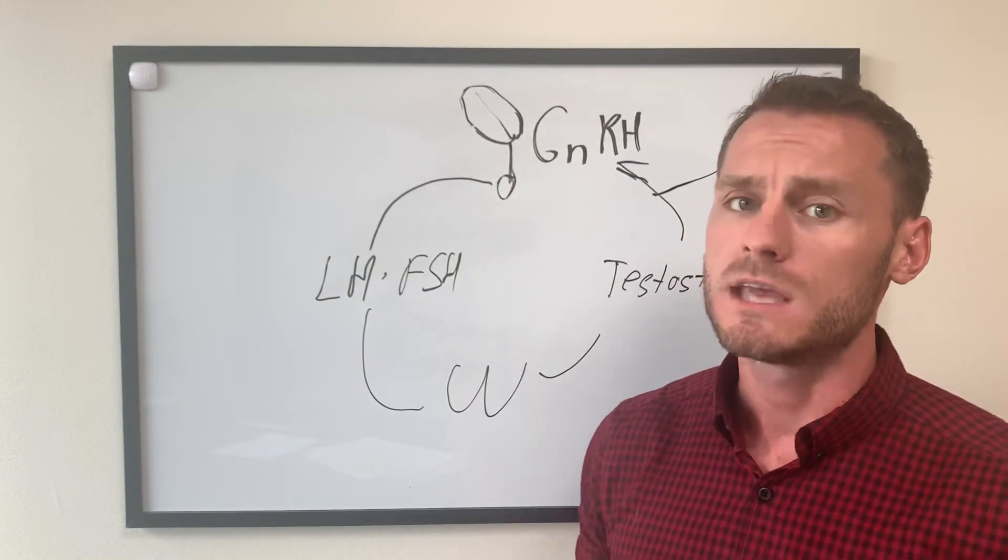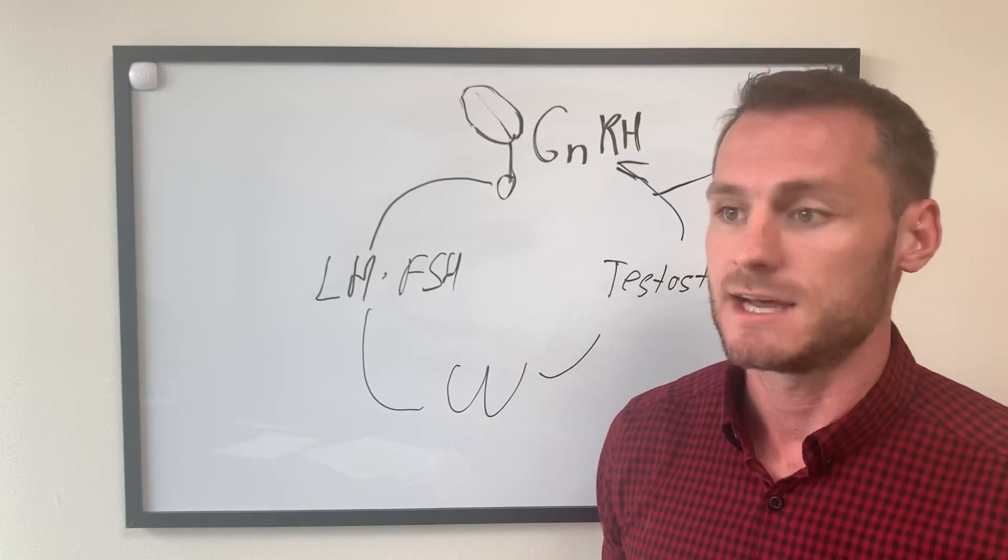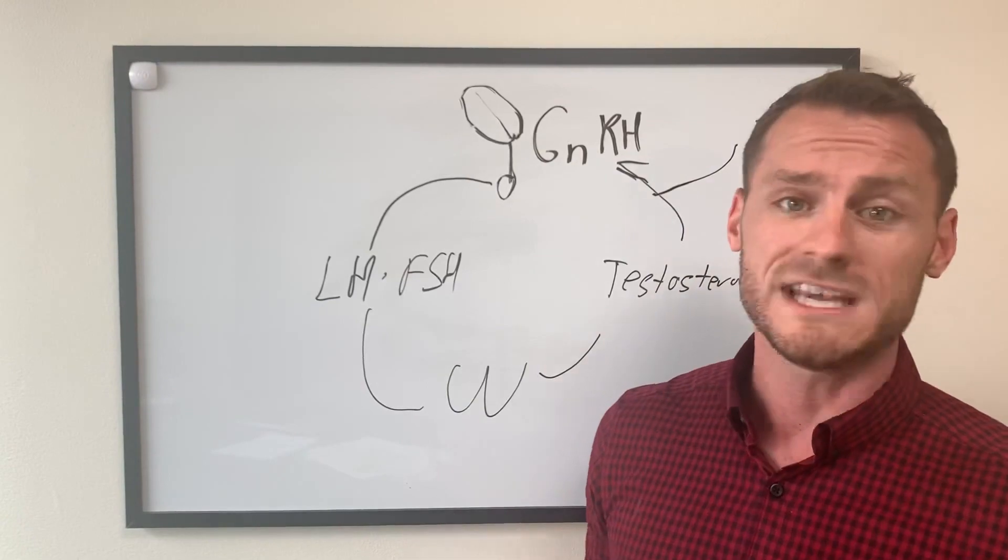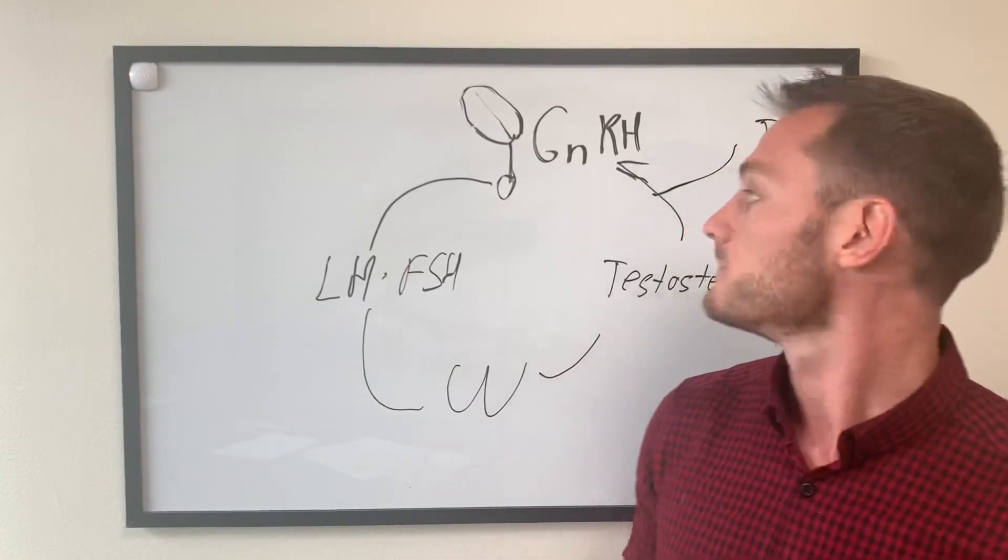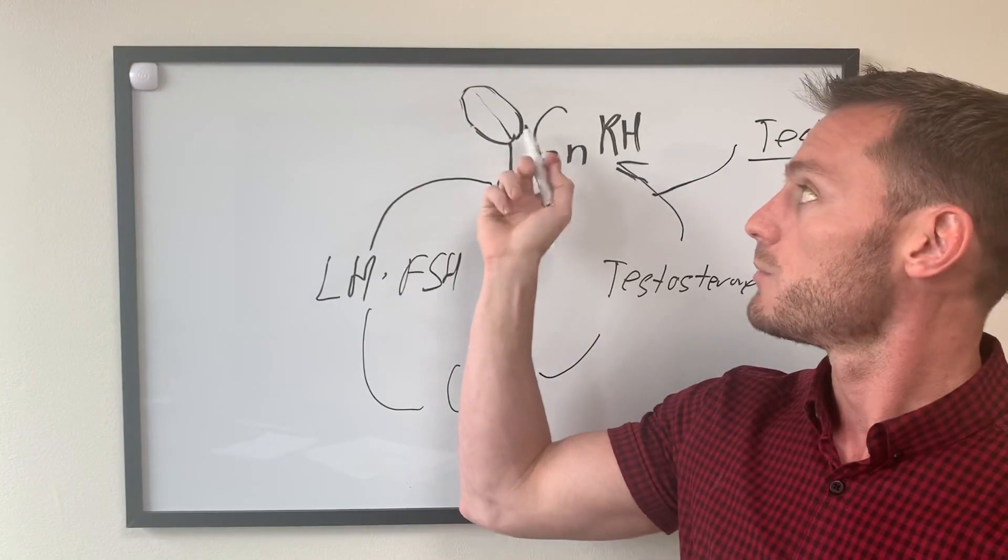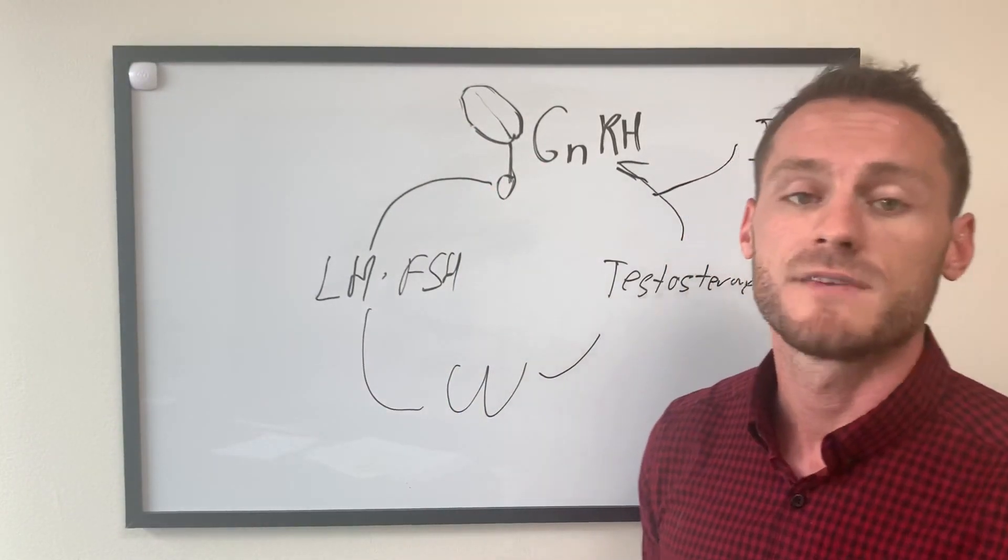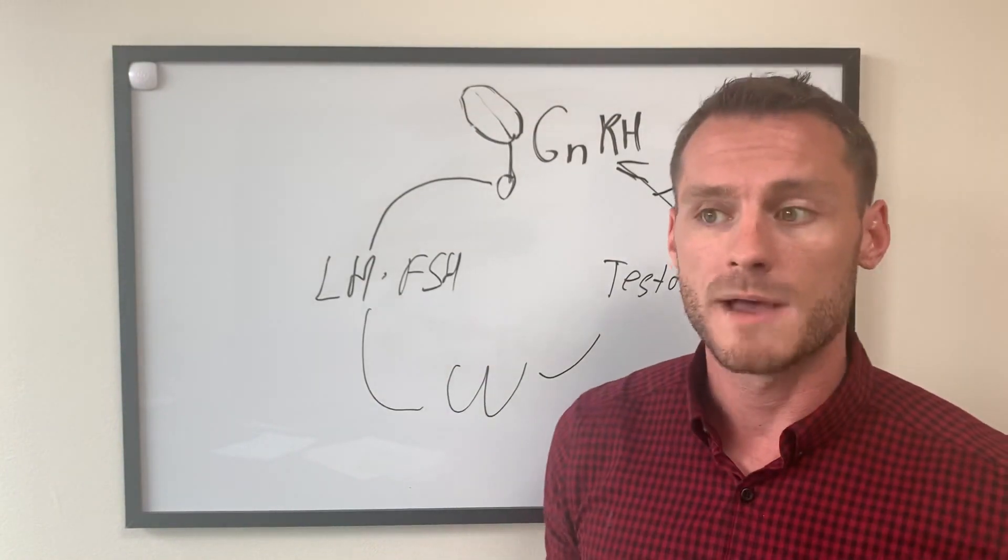So this would be considered exogenous testosterone, meaning that it's coming from outside of the body. This is our endogenous testosterone, meaning it's being produced inside of the body. Now the thing is when we start giving your body extra testosterone, the brain is going to shut that signal down. It said whoa, we asked for 10 and now we have 50. So the pituitary and the brain are going to slow down gonadotropin-releasing hormone, slow down LH and FSH.